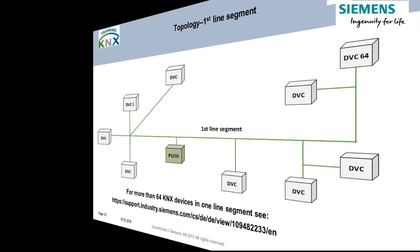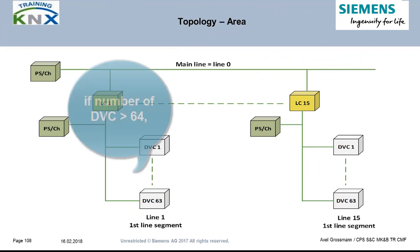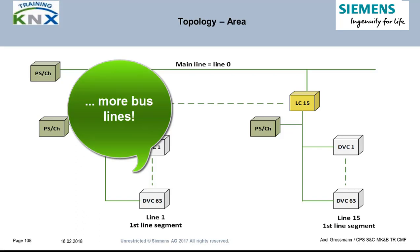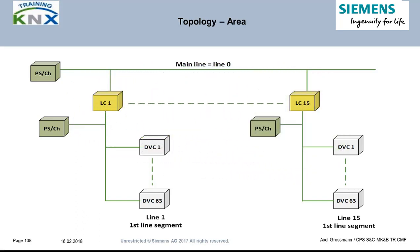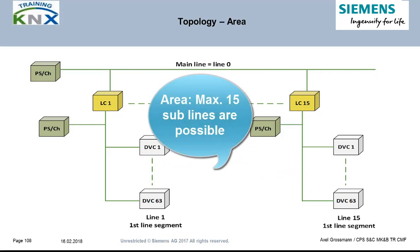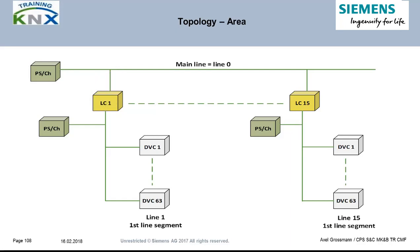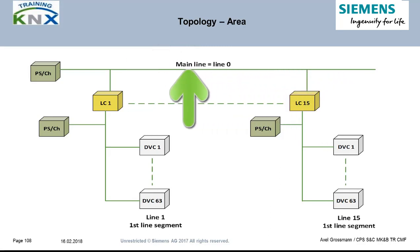If a line segment with maximum 64 devices is not sufficient, or the power consumption of the devices exceeds what one or two power supplies can provide, more lines have to be created. Limited by the addressing scheme, up to 15 subordinate lines are possible. Each operates independently with its own KNX power supply. To make them communicate with each other, they are equipped with line couplers connected to the so-called main line. This complete structure of sublines and one main line is called an area.